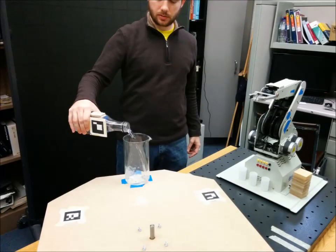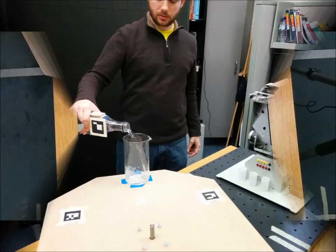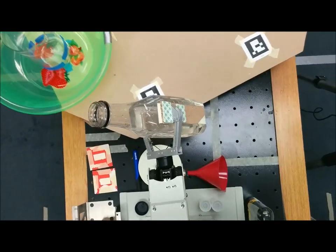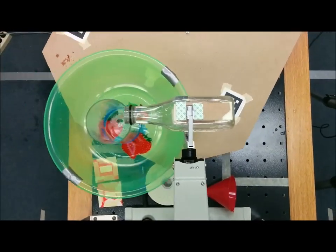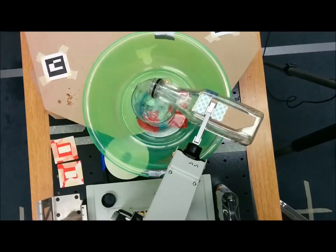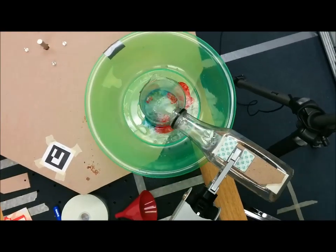As an example, consider the dynamic pouring task shown here where liquid needs to be poured from a bottle into a moving container. This is representative of similar unstructured tasks carried out in manufacturing environments and is currently challenging for traditional motion planners as full fluid dynamic simulation will be needed in order to pour the correct amount.